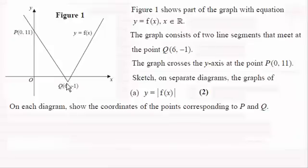So what happens is that this kind of V-shape below the x-axis gets reflected in the x-axis and what you get is a graph looking something like this.